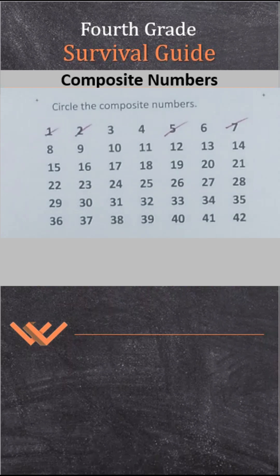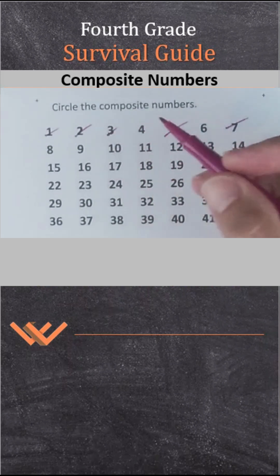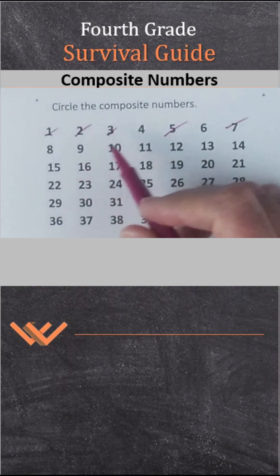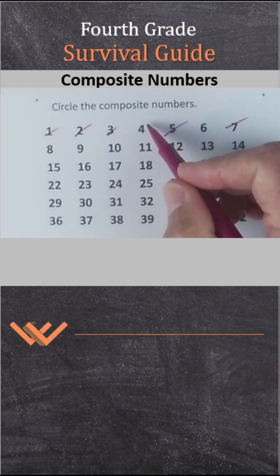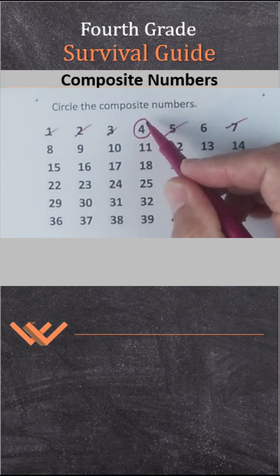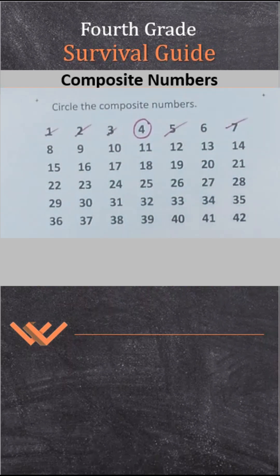That leaves us with — missed one here. So 4 is composite because it has 1, 2, and 4. 6 is composite because it has 1, 2, 3, and 6.